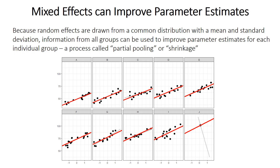Overall, mixed effects models are great if you want to account for non-independence because your observations are grouped, and they're also very helpful for improving prediction from linear models by taking advantage of shrinkage to get better estimates. They can become very complicated as you get nesting and crossing of factors, so it's extremely important to understand your questions, your data, your study design, how to set up the model, and how to ensure that your data meet the assumptions and the model is a good fit. But if you can ensure all of that, mixed effects models can be very powerful tools.